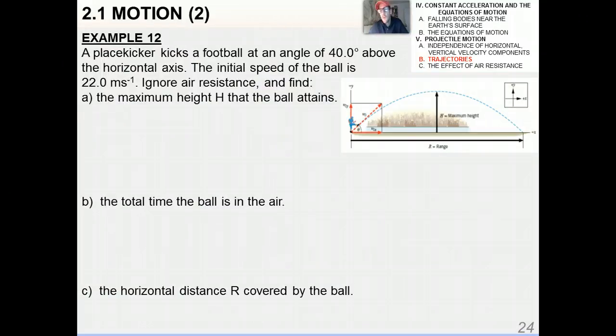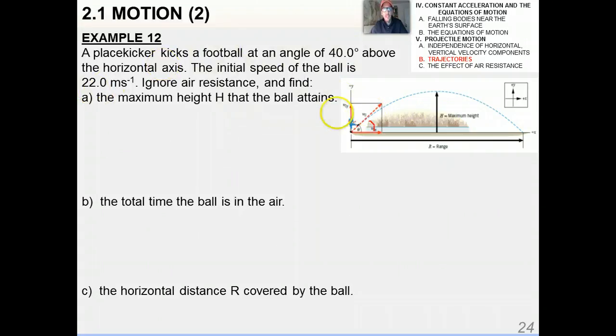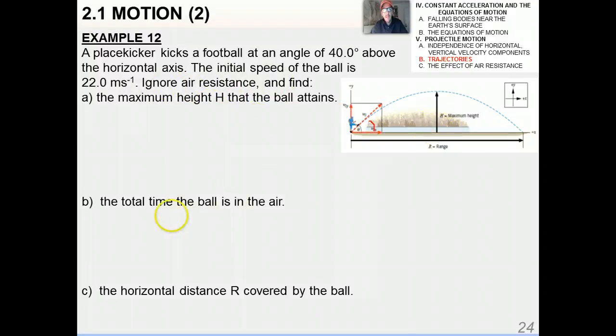All right, so just another example, one more to kind of sum things up here. We're doing lots of examples in the homework study packet. Go ahead and pause the video and try this one on your own. A placekicker kicks a football at an angle of 40 degrees—there's your angle. The initial speed of the ball is 22 meters per second, going up at that angle. Ignoring air resistance, find the maximum height the ball attains, the total time the ball is in the air, and the horizontal distance or range R covered by the ball.